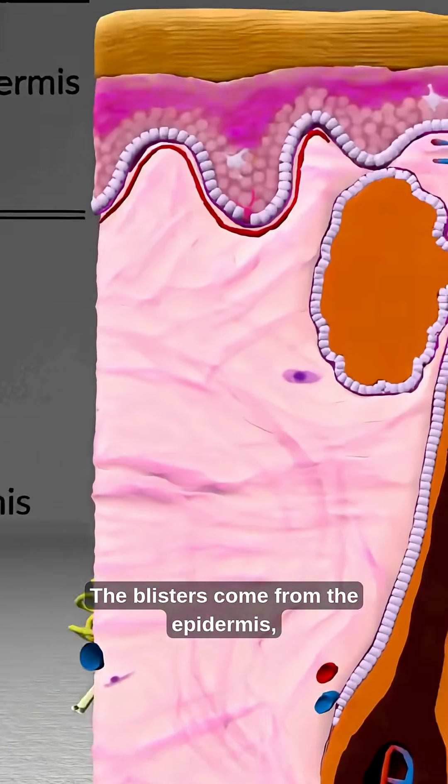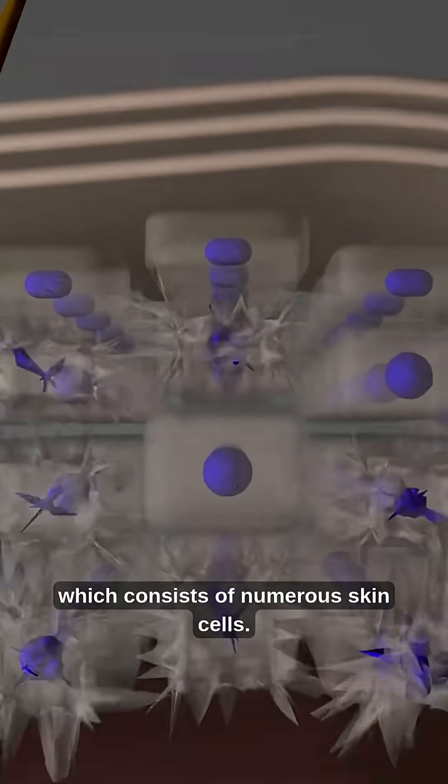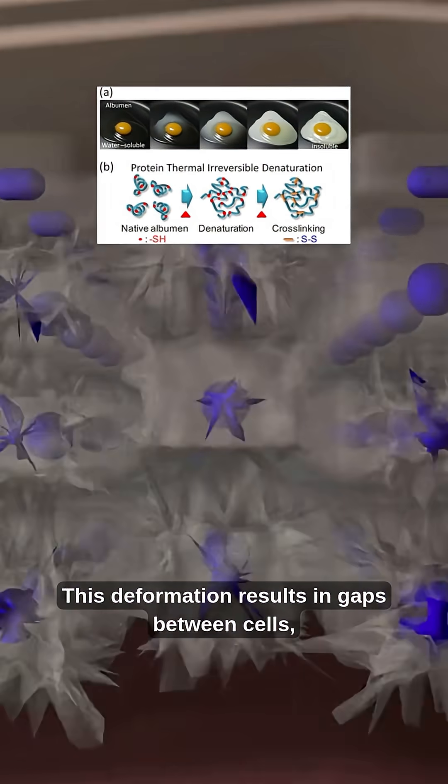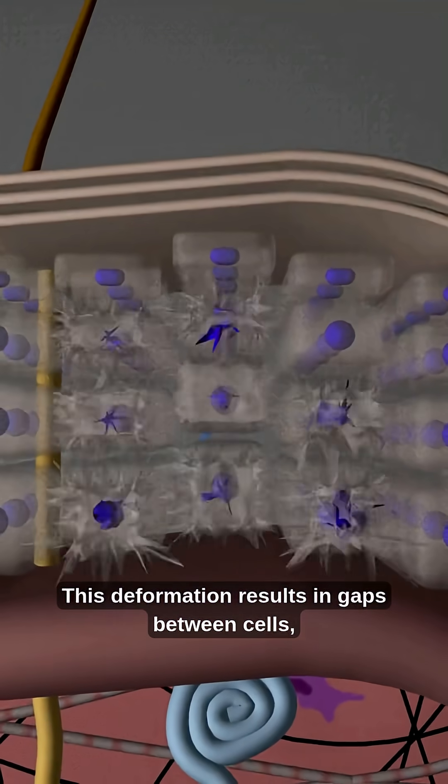The blisters come from the epidermis, which consists of numerous skin cells. The proteins in our skin cells are deformed by the heat, just as egg whites are when boiling. This deformation results in gaps between cells.